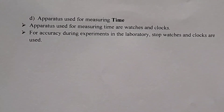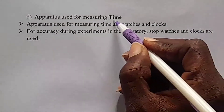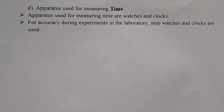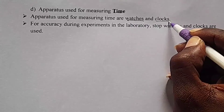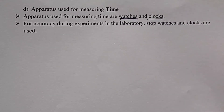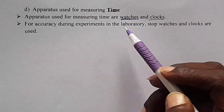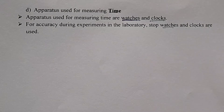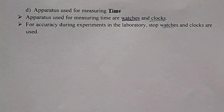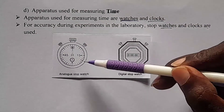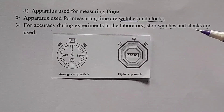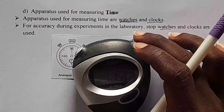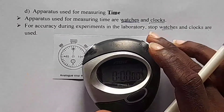Next, we are going to look at apparatus used for measuring time. Apparatus used for measuring time are watches and clocks. For accuracy during experiments, in the laboratory, stopwatches and stop clocks are used to measure time accurately. Here we have the stopwatch and the stop clock. This is the stopwatch.